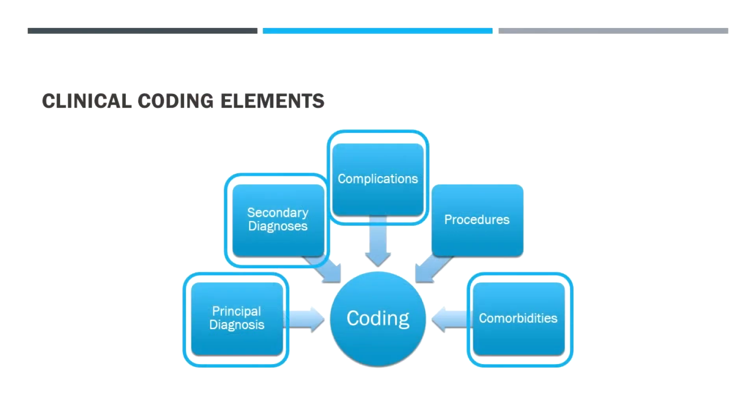On this diagram, apart from the principal diagnosis, the secondary diagnoses, the complications, the procedures and comorbidities, all go in to contribute an accurate code. There are clinical coders who sit in an office — this is what they do all day every day. They're trained to look through our documentation — admission notes, discharge, ward round notes, consults, everything — and try and get the best, most accurate code that will reflect that patient's journey, which will be used for funding, performance, and other elements.